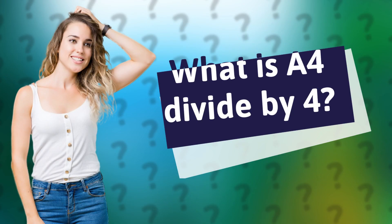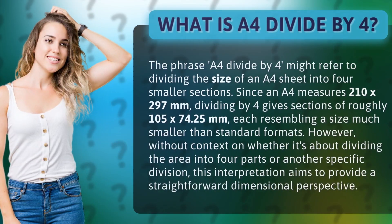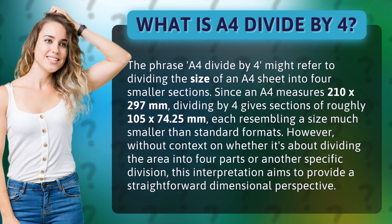What is A4 divided by 4? The phrase 'A4 divided by 4 feet' might refer to dividing the size of an A4 sheet into 4 smaller sections. Since an A4 measures 210 by 297 millimeters, dividing by 4 gives sections of roughly 105 by 74.25 millimeters, each resembling a size much smaller than standard formats.